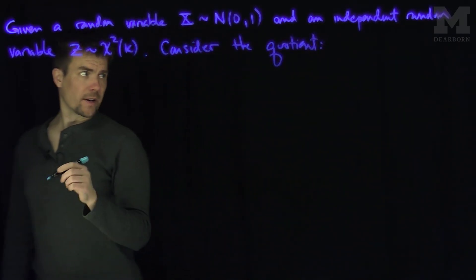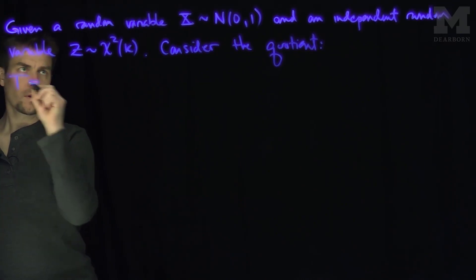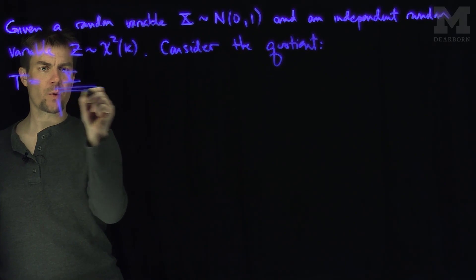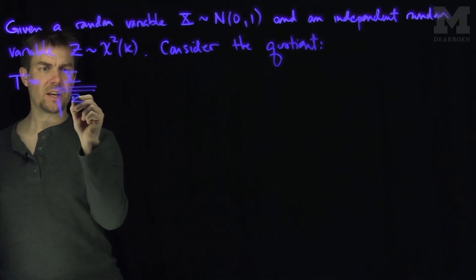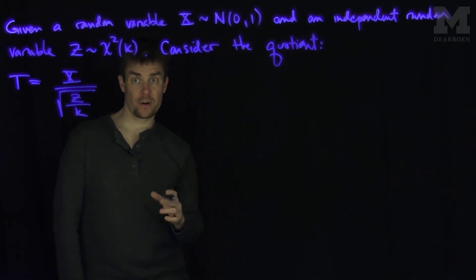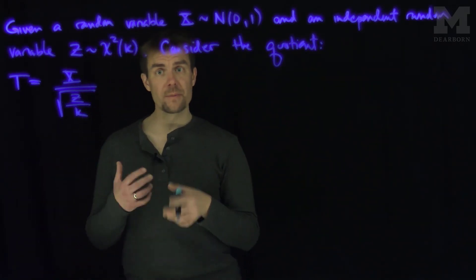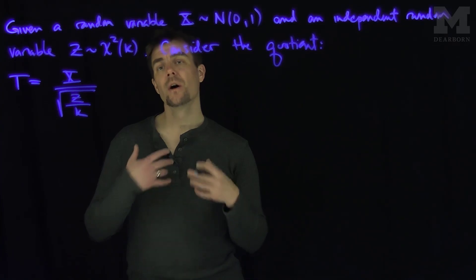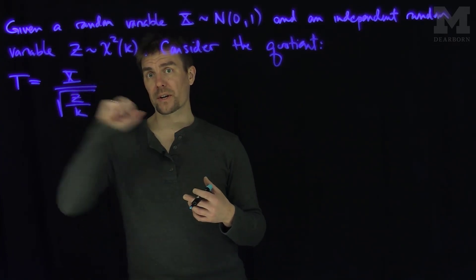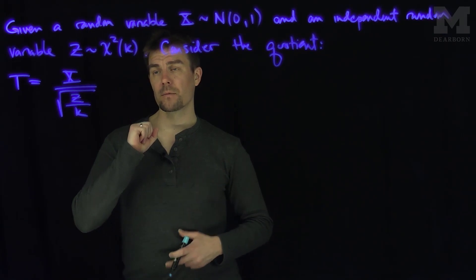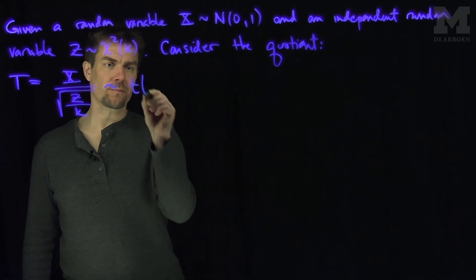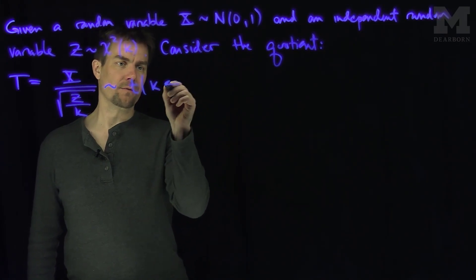I'll define a new random variable t, which is random variable x divided by the square root of z over k. So this ratio of a Normal(0,1) random variable over the square root of an independent chi-squared random variable with k degrees of freedom, divided by k. This is called a t-distribution with k degrees of freedom.